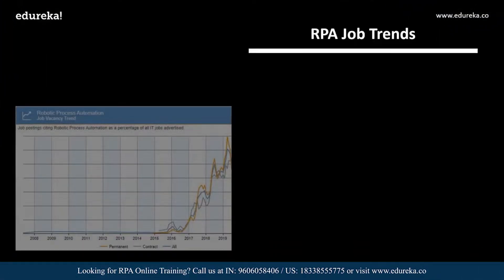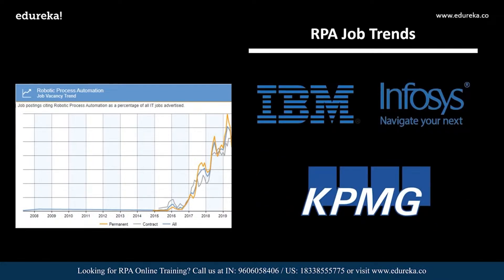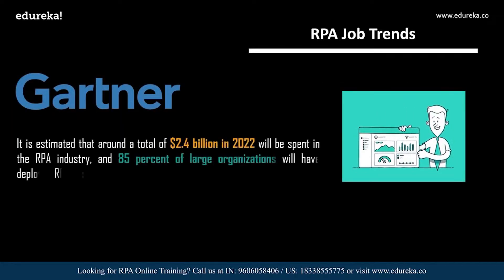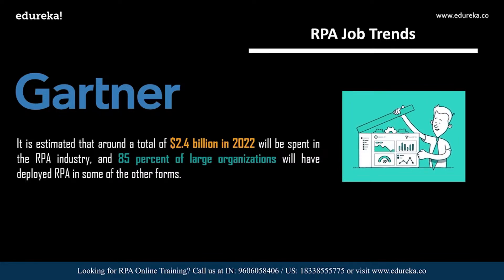The number of RPA developer jobs in the United Kingdom is increasing on a large scale. Both startups and well-established companies like IBM, Infosys, and KPMG are offering lucrative salaries. According to Gartner, around $2.4 billion US dollars is estimated to be spent in the field of RPA by 2022, and 85% of large organizations will have deployed RPA in some form.